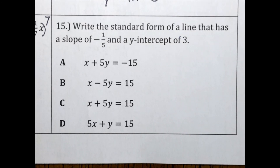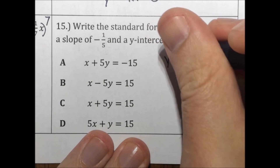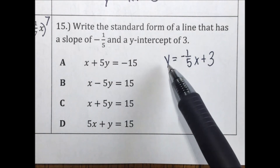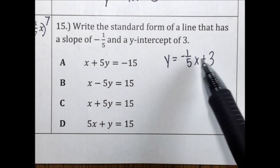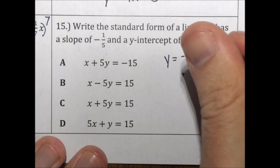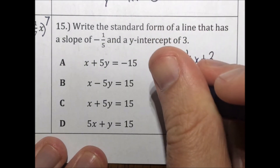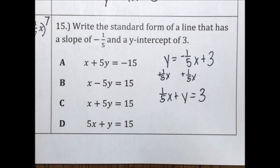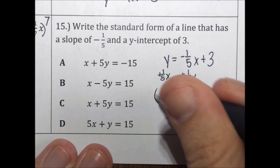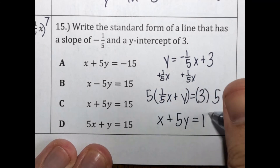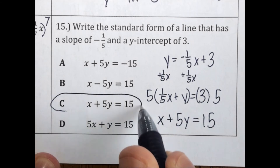Write the standard form of a line that has a slope of negative 1 fifth and a y-intercept of 3. Start in slope-intercept form: y equals negative 1 fifth x plus 3. For standard form, add 1 fifth x to both sides: 1 fifth x plus y equals 3. Multiply everything by 5 to eliminate the fraction: x plus 5y equals 15. That's choice C.